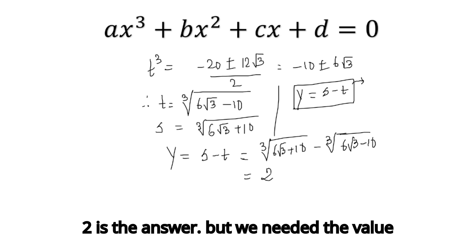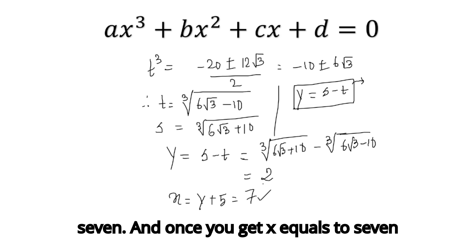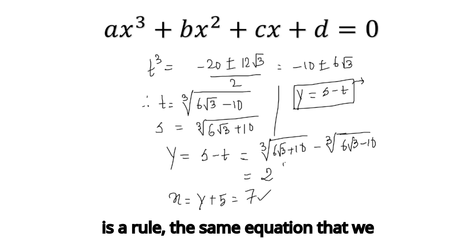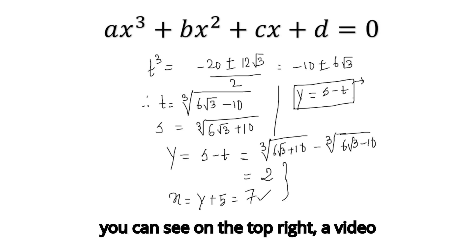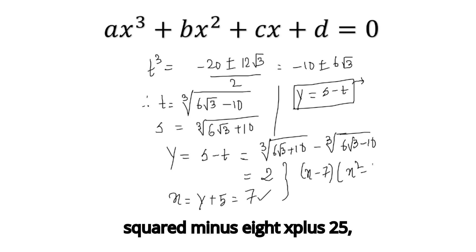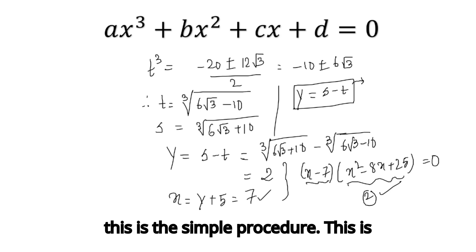So y = 2 is the answer, but we needed the value of x. Remember x was y + 5, so x = 7. Once you get x = 7 as a root, the same equation that we started with can be factorized using the vanishing method, which you can see on the top right. You can write the equation as (x-7)(x² - 8x + 25) = 0. Since you know x = 7, you can find out the other two roots.